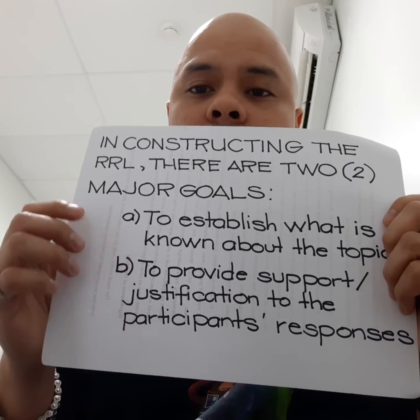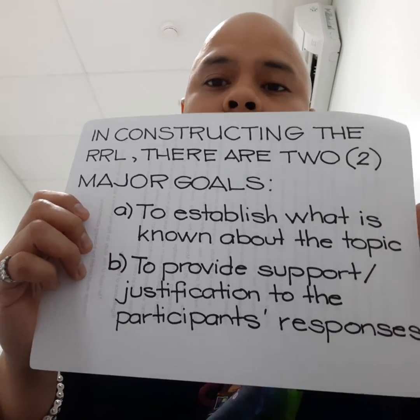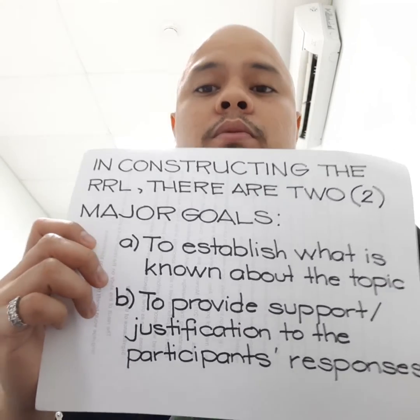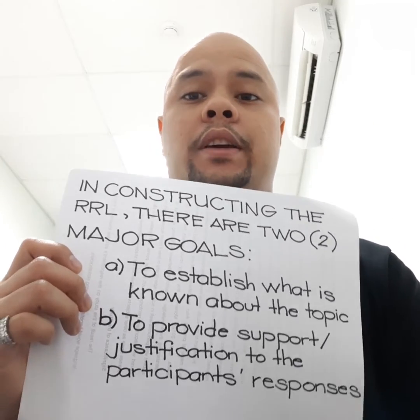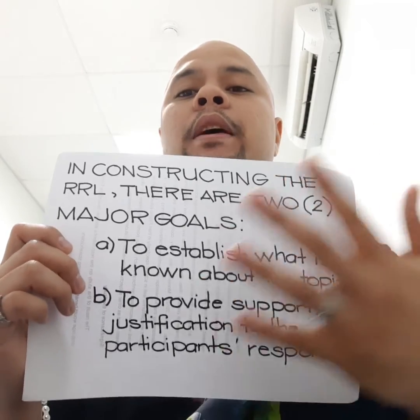And second, it is going to provide support or justification to the participants' responses at the end of your research or once you have collected your data. The common practice is that most people simply write the review of related literature, but it does not perform any significant function — because you have all these references, all these articles and journals, but at the end of your study, they're not going to be used.